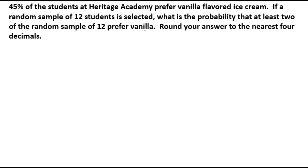That means that 2 of them can prefer vanilla, 4 of them, 10 of them — anything including and over 2 prefer vanilla. So we want to know what that probability is.